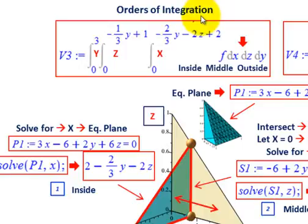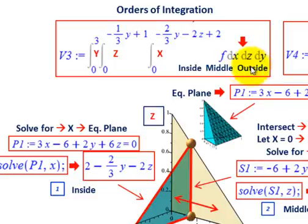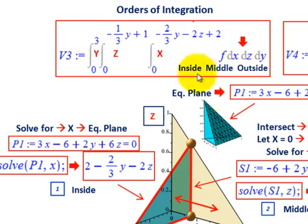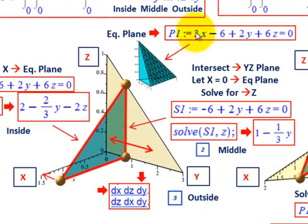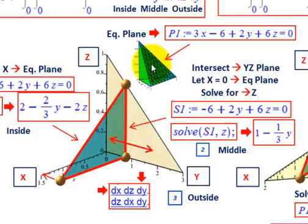Now to set up our orders of integration, we're looking at the first case: dx, dz, dy. We start with our inside integral and move to the outside. dx is the inside integral, dz is the middle, and dy is the outside. We're dealing with the equation plane: 3x minus 6 plus 2y plus 6z equals 0 — that's the face of the tetrahedron.